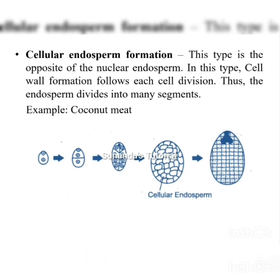In cellular endosperm formation, cell wall formation follows each cell division. The endosperm divides into many segments, and coconut meat is the typical example of cellular endosperm.